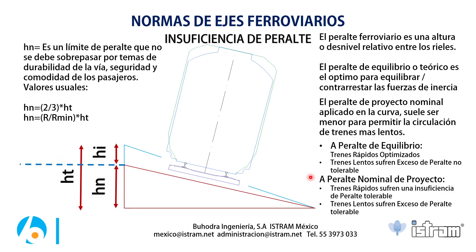Los valores de peralte no deben sobrepasar un máximo por temas de durabilidad, seguridad y comodidad. Los valores usuales son dos tercios del peralte de equilibrio — criterio muy utilizado en Reino Unido. Otro criterio usado en Europa es proporcional al radio mínimo: la curva con el radio más pequeño tendrá el máximo de peralte y la máxima insuficiencia. Cada curva en el proyecto usualmente será con radio ligeramente mayor al mínimo, y se debe hacer la proporción entre el radio mínimo y el radio real, multiplicado por el peralte de equilibrio.